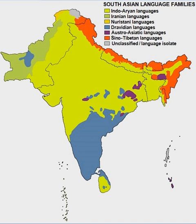Old Tamil verbs also had a distinct negative conjugation, e.g., 'kanom' meaning 'we do not see'. Nouns could take pronominal suffixes like verbs to express ideas, e.g., 'pentirem' meaning 'we are women', formed from 'pentir' (women) and the 1st person plural marker. Despite significant grammatical and syntactical change between Old, Middle, and Modern Tamil, Tamil demonstrates grammatical continuity across these stages, with many characteristics of later stages having their roots in features of Old Tamil.